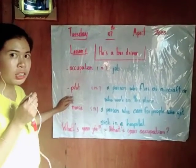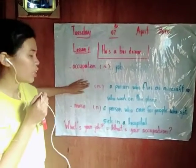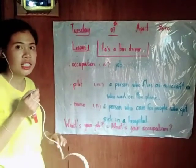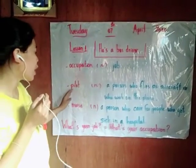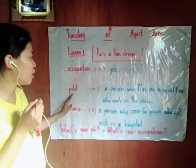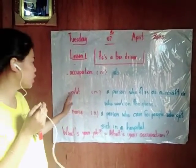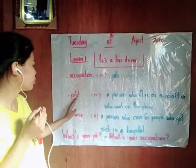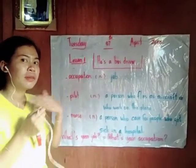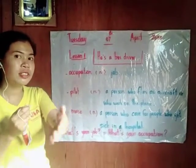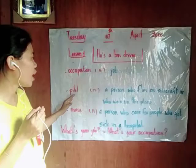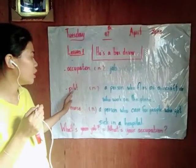Now continue to the word pilot. How many letters does pilot have? Five letters. Listen to me: P-I-L-O-T, pilot. P-I-L-O-T, pilot. Now your turn. P-I... L-O-T. P-I-L-O-T, pilot.